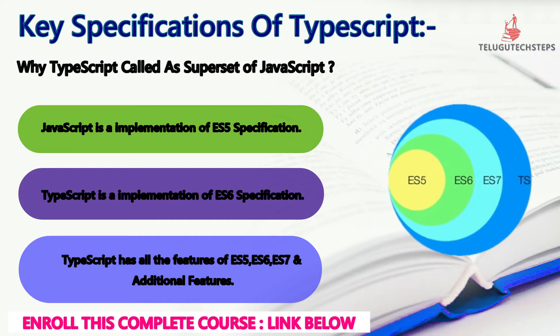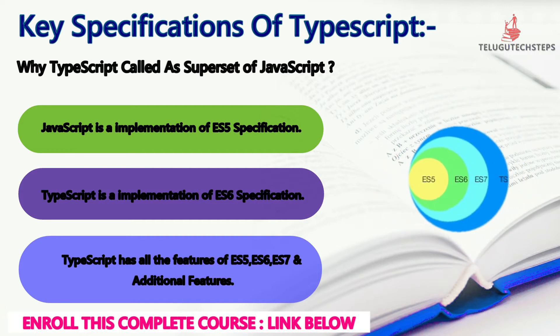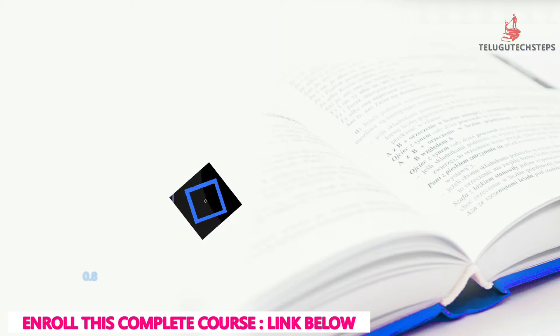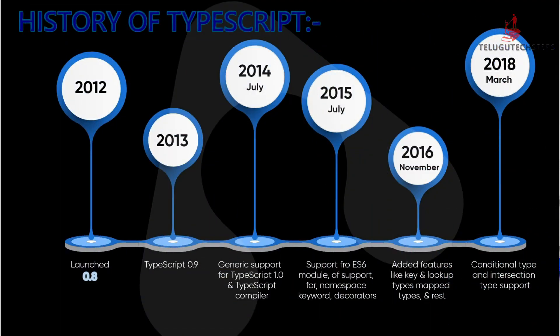Coming to the next point: TypeScript history. I will explain a simple snippet to explain. First, TypeScript was released in 2012, and the release version was 0.8.